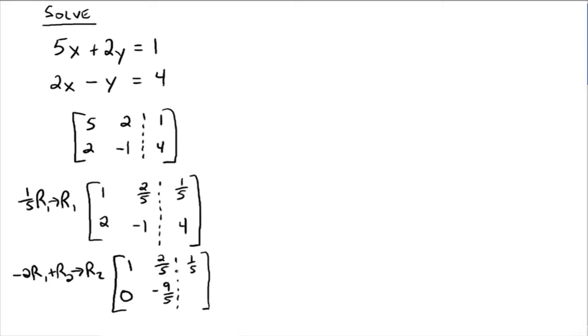Now you have negative 2 times 1 fifths, which is negative 2 fifths. And we're going to add that to 4. Everybody see that? Negative 2 times 1 fifths is negative 2 fifths added to 4. All right, so that's negative 2 fifths plus 20 fifths, which is 18 fifths.